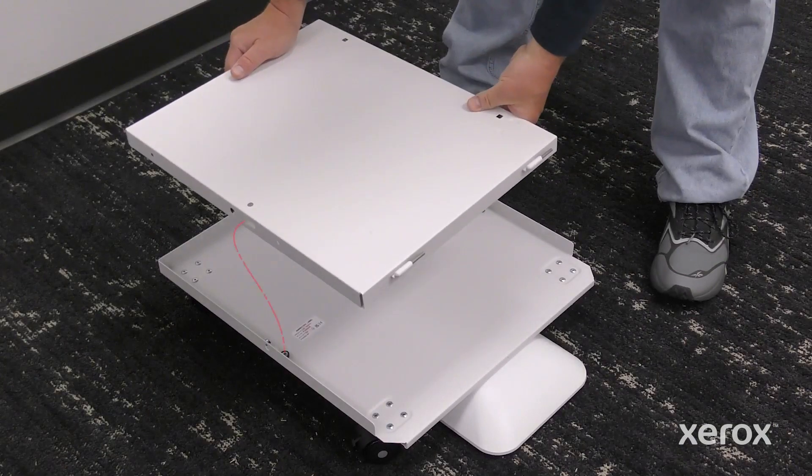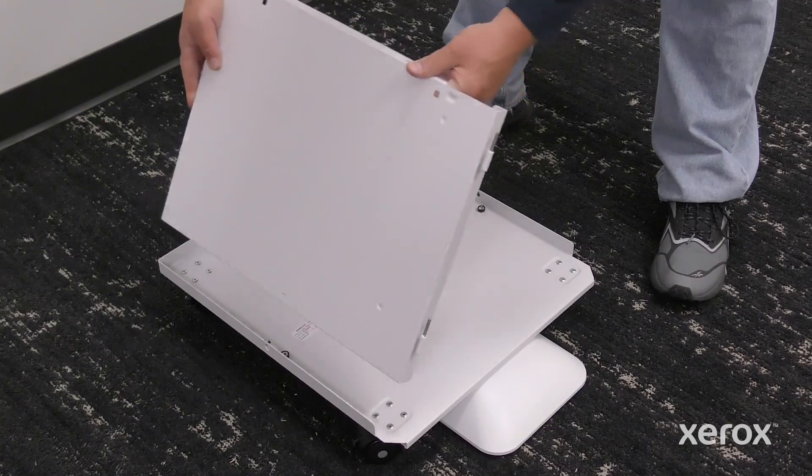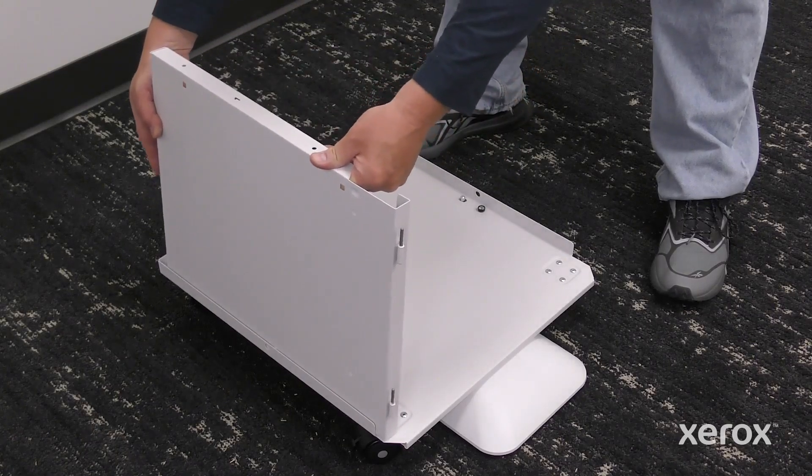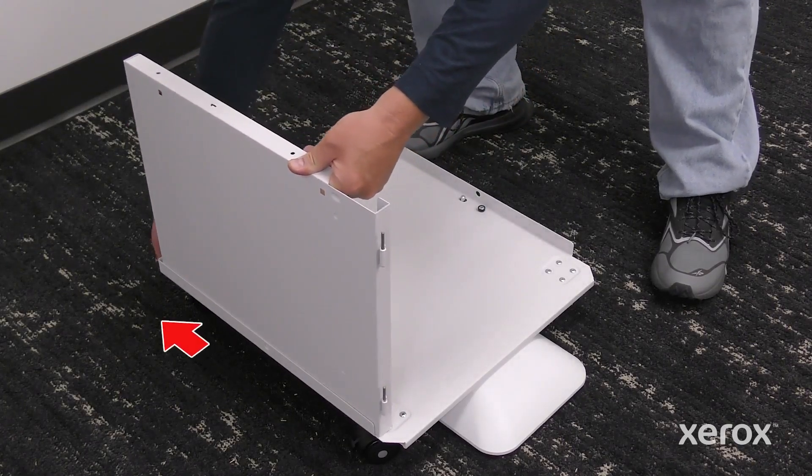To install the left panel, align the large center hole with the post on the stand base. Slide the left panel back, then push until it clicks.